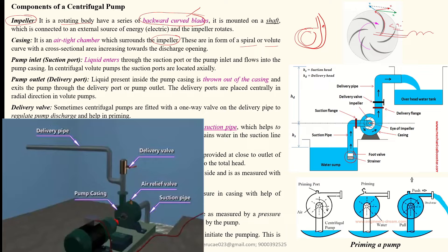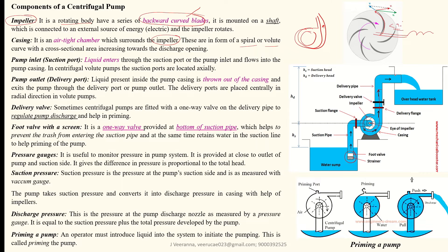The pump outlet, or delivery port, is where the water moves outward from the casing after being thrown by the impeller. The water is lifted outward from the casing — that is called your pump outlet or delivery port. Centrifugal pumps are sometimes fitted with a one-way valve to control and regulate the flow — that is called the delivery valve.